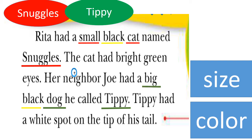Snuggles is small, but Tippy is big. If we need to compare the color, the color of Snuggles is black, and the color of Tippy is black too.